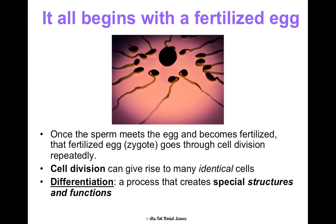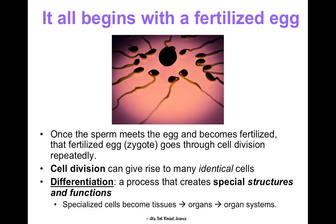Then this process of differentiation happens, where certain cells are created that have special structures and functions. Instead of just being a ball of identical cells, the cells start differentiating into skin cells, bone cells, hair cells, muscle cells, and brain cells. Once they specialize, they start forming into groups of tissues, those tissues form into organs, those organs develop into organ systems, and all of that works together to make you an organism.